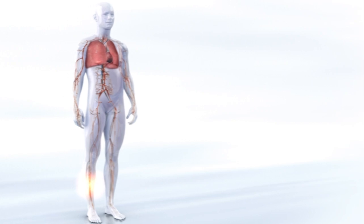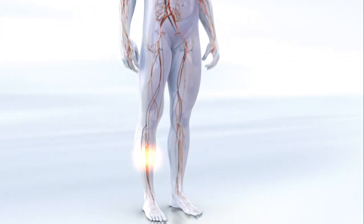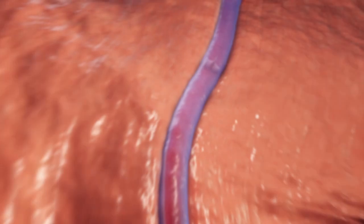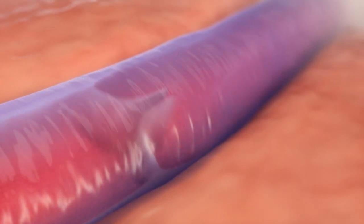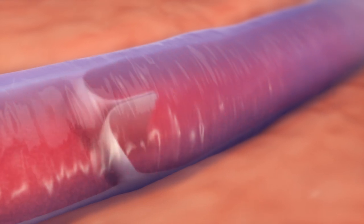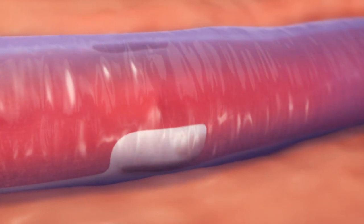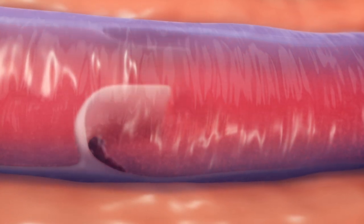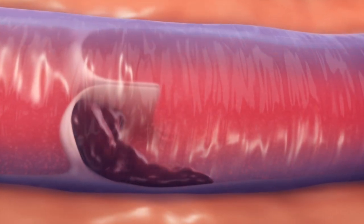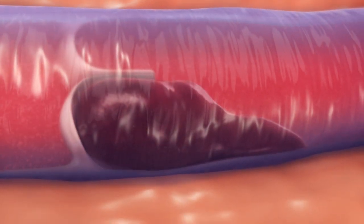The disease process starts often in one of the large veins of the leg with the formation of a blood clot. This can be due to vessel wall injuries, a pathological increase in the coagulability of the blood, or circulation deficits such as venous stasis. The resulting blood clot consists mostly of red blood cells, held loosely together by strands of fibrin.